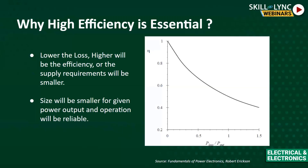Now, the switching converter needs a control input in addition to the power input, to deliver the desired power output. The switching converter can be of basically four types, which are the origin of many other converters. The DC-DC converter takes a DC input and provides a controlled DC output voltage or current. This is used in power supplies like computer power supplies and in electric vehicles as the onboard charger.